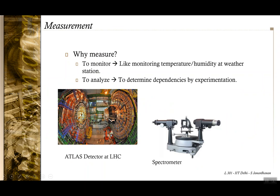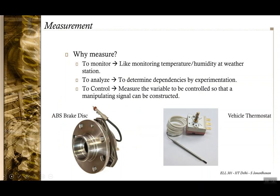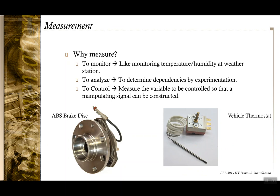The second reason would be to analyze a quantity and to determine whether there are any dependencies between different quantities — this is basically the research purpose. A third and more widespread purpose is that measurement is used so that some other variable can be controlled and a manipulating signal can be generated. For example, the thermostat in your AC measures temperature and depending upon the temperature determines whether the AC should be turned on or off.